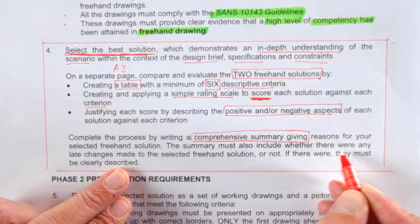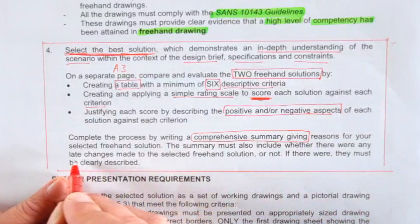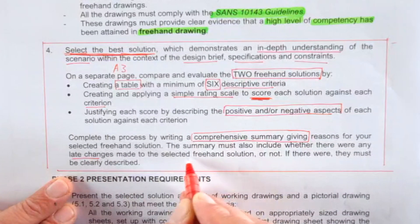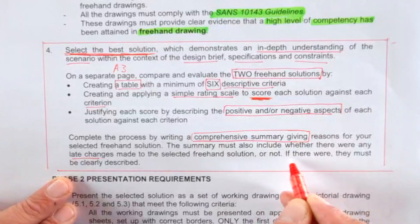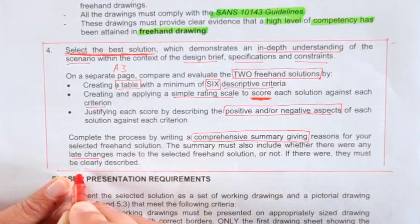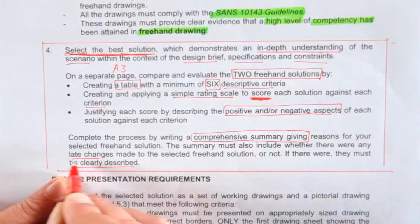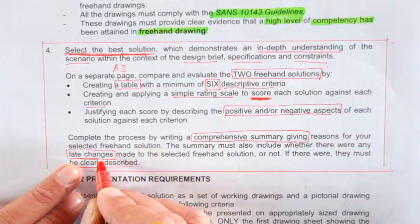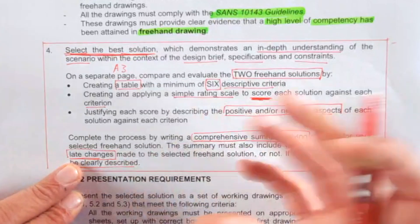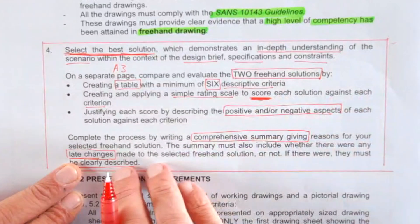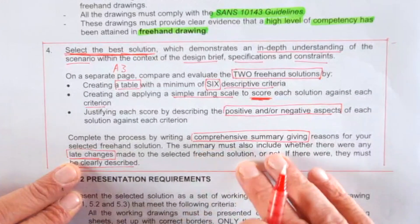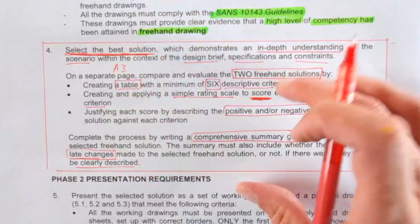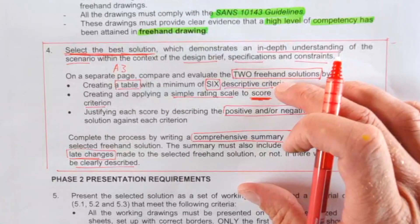The summary must also include whether there were any late changes made to the selected freehand drawing solution or not. If there were, they must be clearly described. It might be that after this process you feel there are some changes you want to make — you just need to list them in your actual process of selecting.